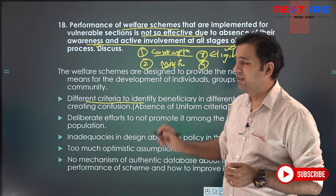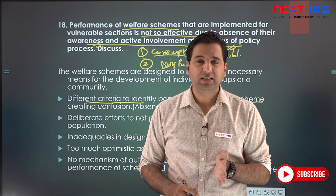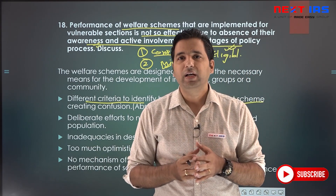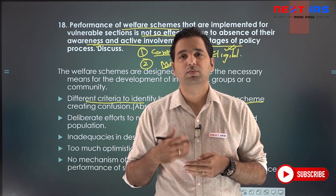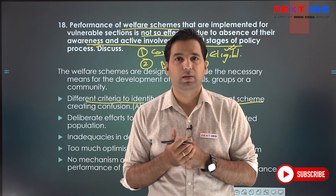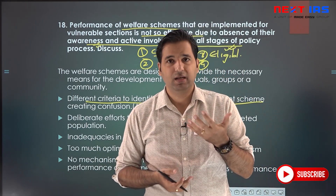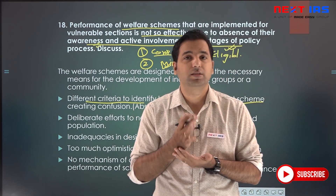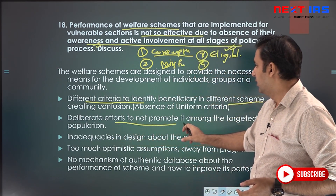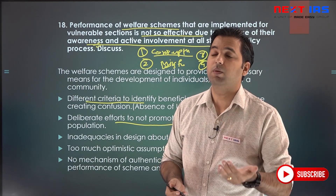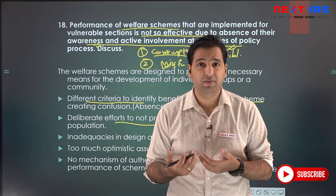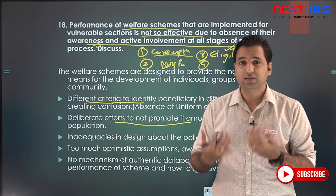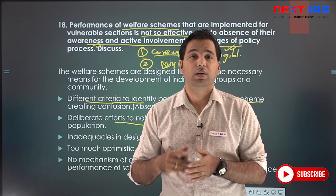The ideal solution would be to derive uniform criteria at the all-India level for both union and state schemes, since most vulnerable sections share common characteristics. Second, deliberate failure to promote schemes among the targeted population means beneficiaries remain unaware. Funds supposed to be allocated may get pilfered or diverted to other schemes. Third, there are inadequacies in the design of policies — inconsistencies that cause the design itself to have limitations. Fourth, policy makers were too optimistic and away from pragmatism, expecting to remove problems that persisted for centuries.